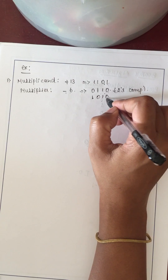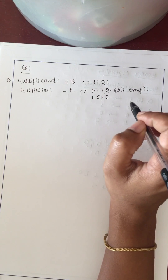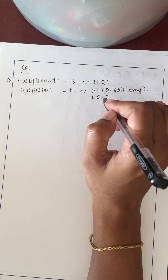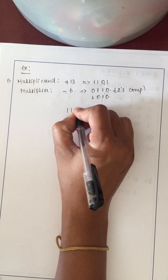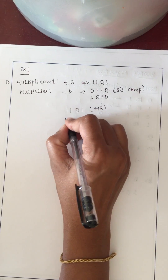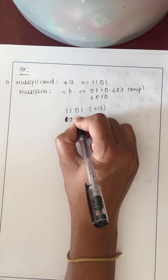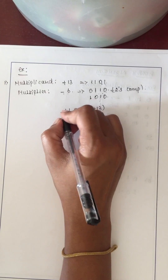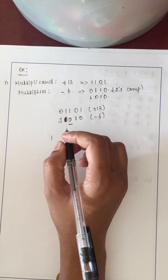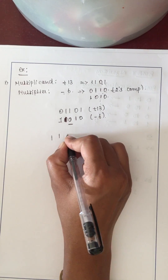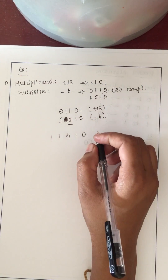After identifying the binary values, add the sign bit at the most significant bit position. For +13, add 0 (positive), giving 01101. For -6, add 1 (negative), giving 11010. This is the multiplier value 1 1 0 1 0. Now we can start recoding — only the multiplier binary value is recoded.